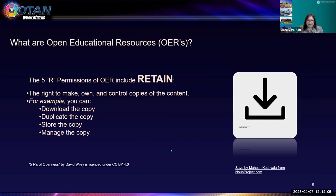The last R is retain — you have the right to make, own, and control copies of that content. For example, you can download a copy, duplicate the resource, or store and manage the copy as you see fit, as long as you're following the license. Any questions on the five R's before I continue?